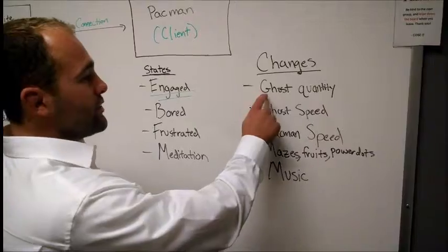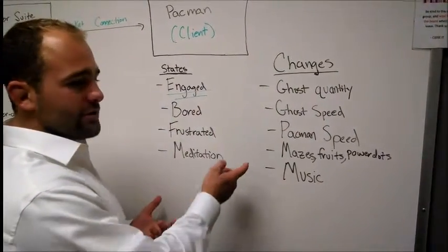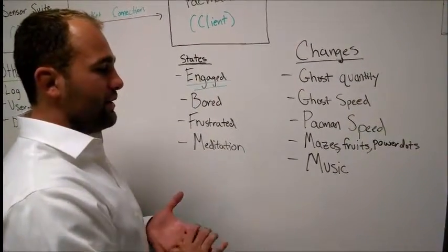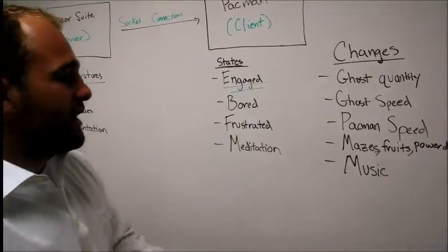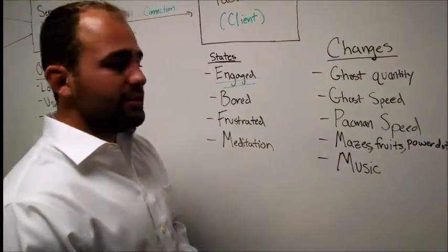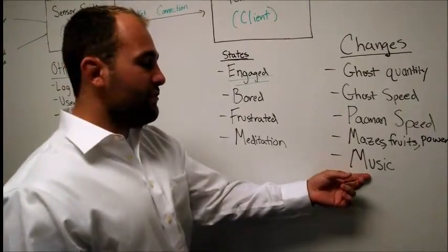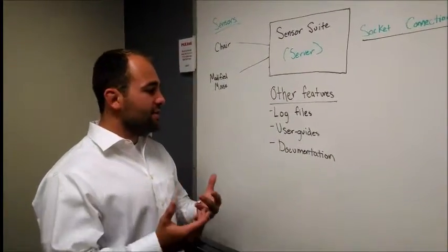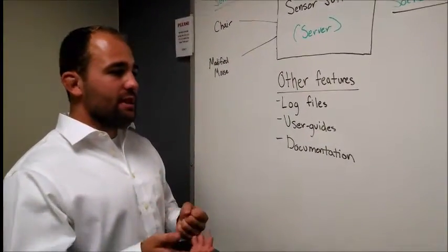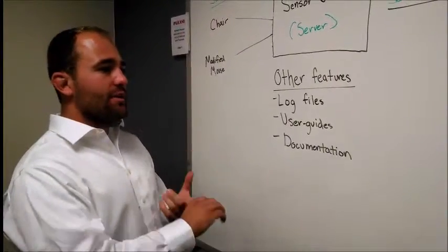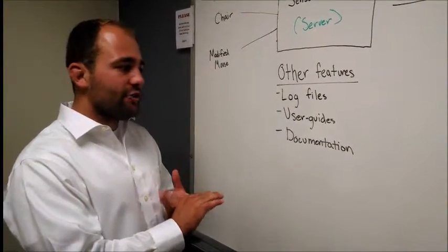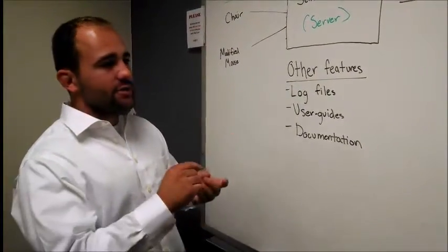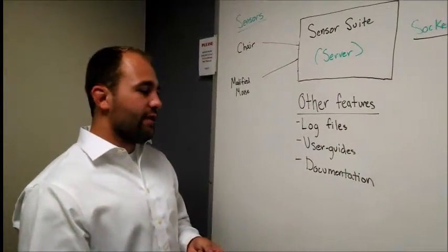We do this by changing the number of ghosts, the speed of the ghosts, the speed of Pac-Man, and the different mazes that will load up — there are hard, medium, and easy mazes — as well as making the fruits and power dots visible in the game. The tempo and speed of the music will also change. We incorporated log files so testers can see when people die in the game, how many ghosts there were, how close they were to finishing, what time it was, what state they were in, and what state they went to next after changes were made.